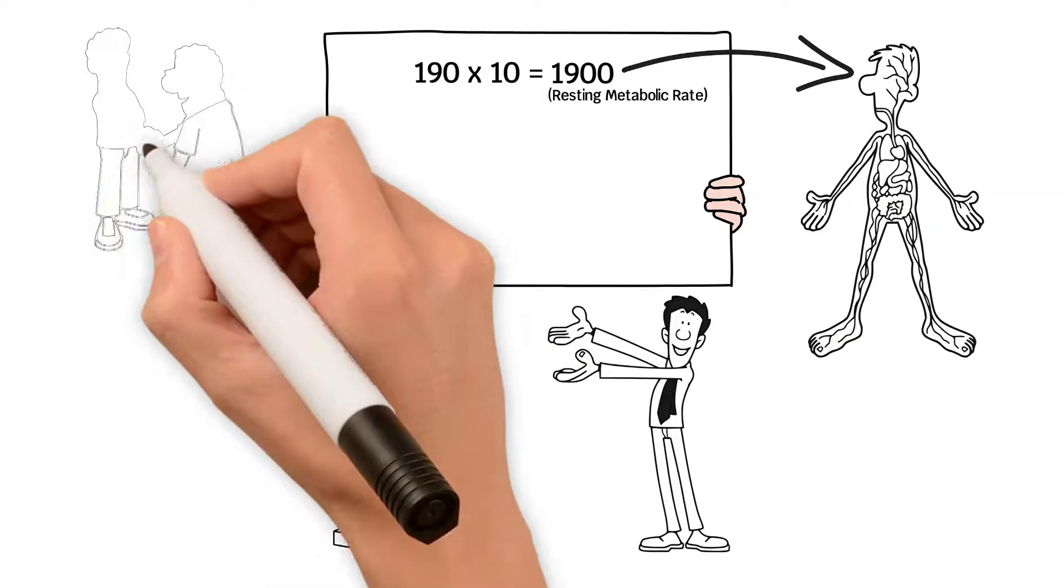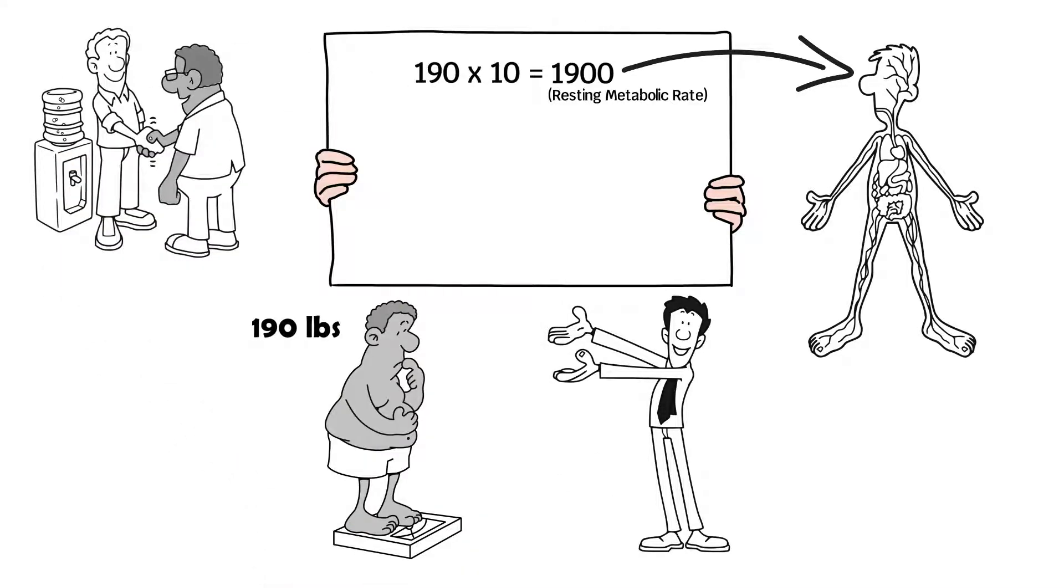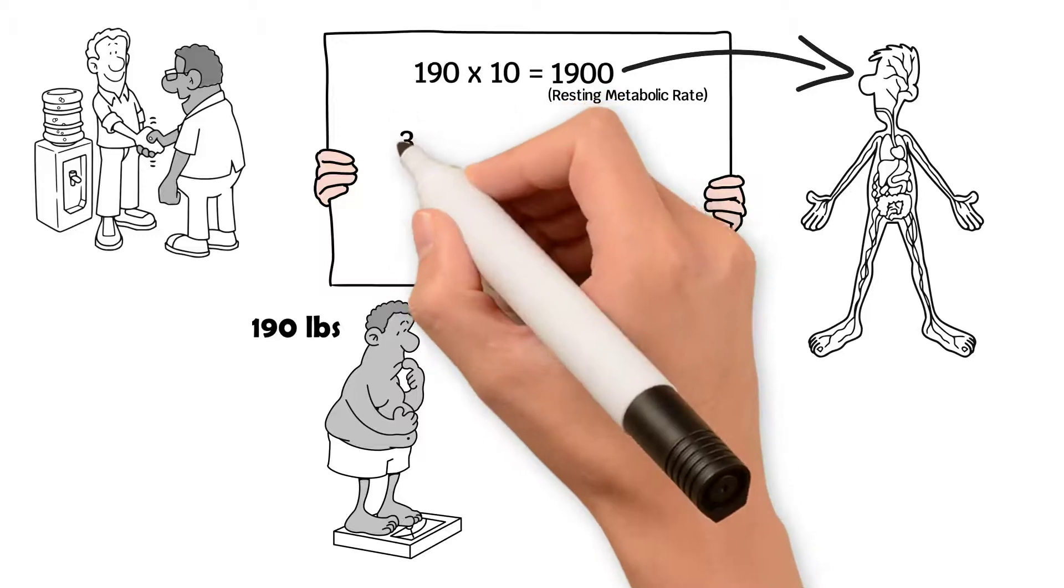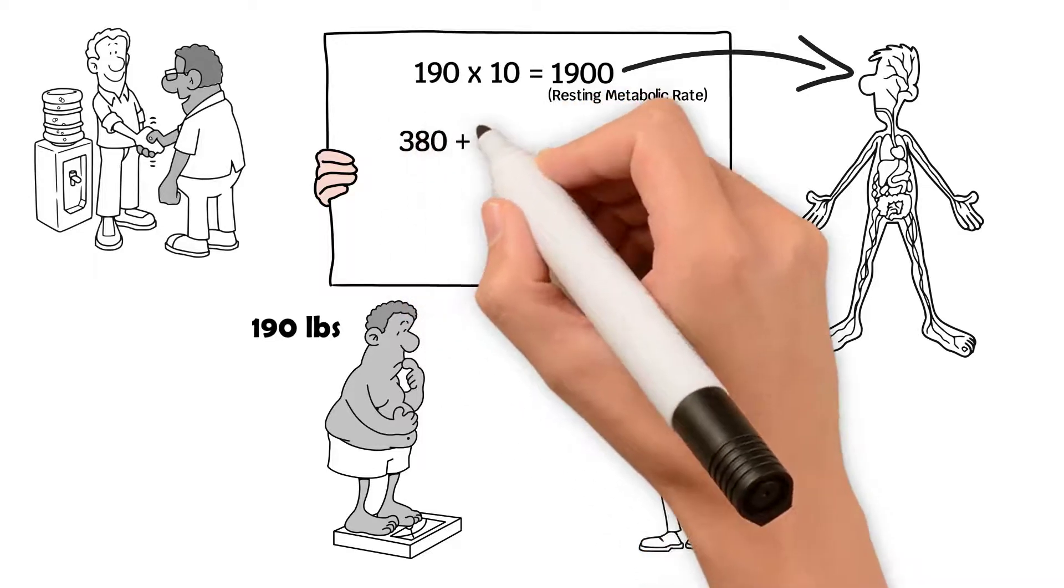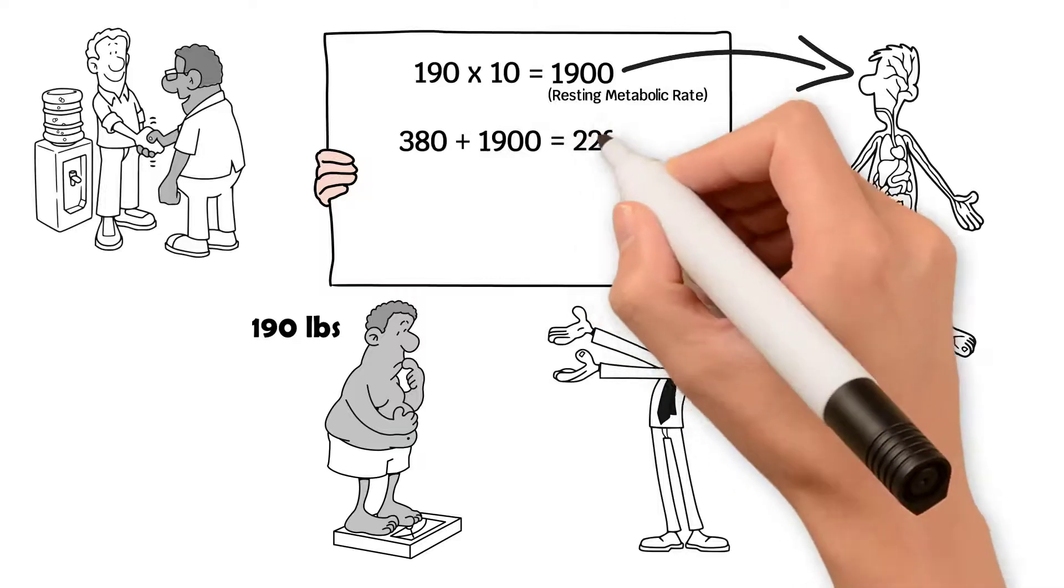The next step we need to do is figure what you do outside and add on 20% of 1900 calories. So, 20% of 1900 is 380. Add that on to 1900 and you get 2280.